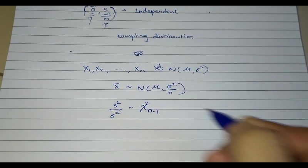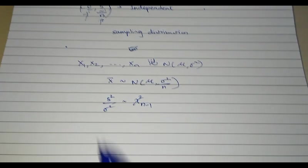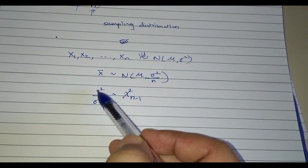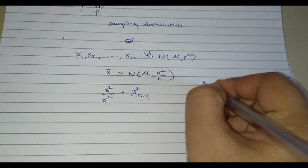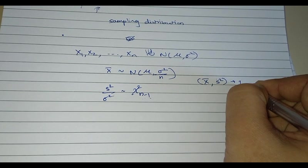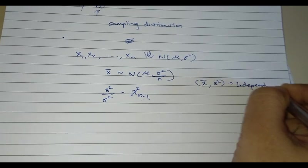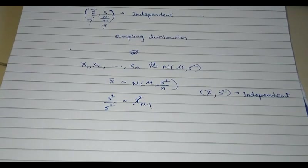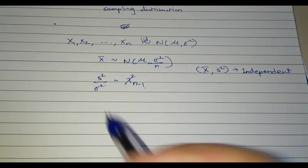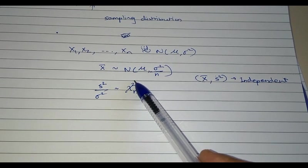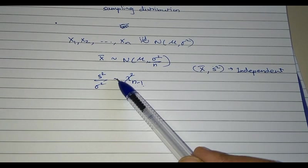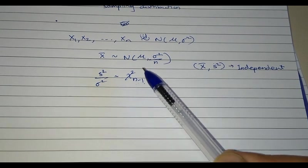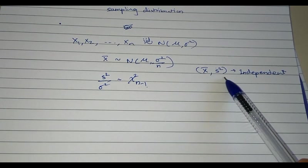Chi-square with how many degrees of freedom? Chi-square with N minus 1 degrees of freedom. One degree of freedom is lost because in computing S² you are subtracting the mean. And you further know that X-bar and S² are independent. So in the univariate setup, the sampling distribution of X-bar and S² is characterized by three things: X-bar is normal with mean μ and variance σ²/N; S²/σ² is chi-square with N−1 degrees of freedom; and X-bar and S² are independent.